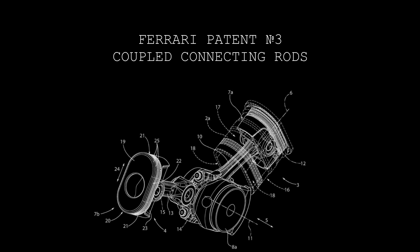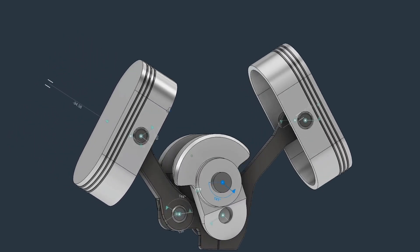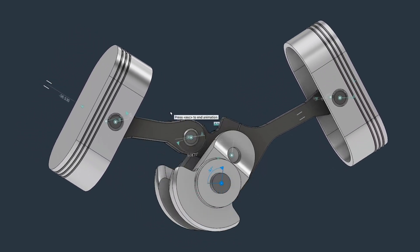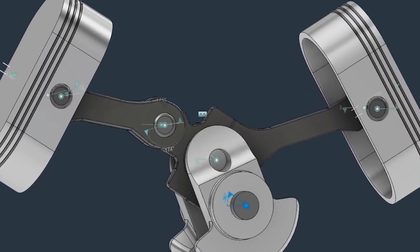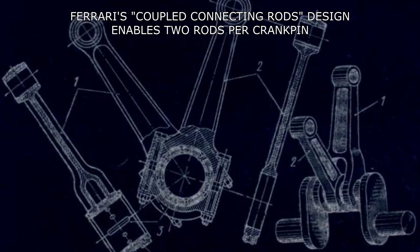Now, let's address what has raised the most questions, the coupled connecting rods. Instead of using double connecting rods, Ferrari opted for single ones, and one connecting rod is attached to the other, hence the name, coupled. This reduces the number of journals on the crankshaft by two, making it smaller, lighter, and stronger.